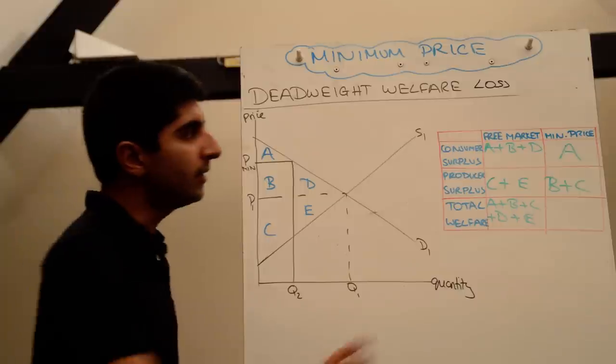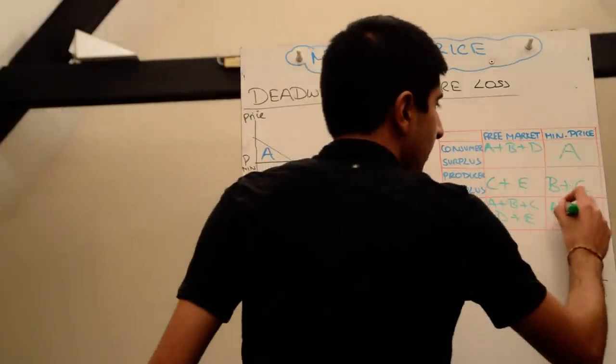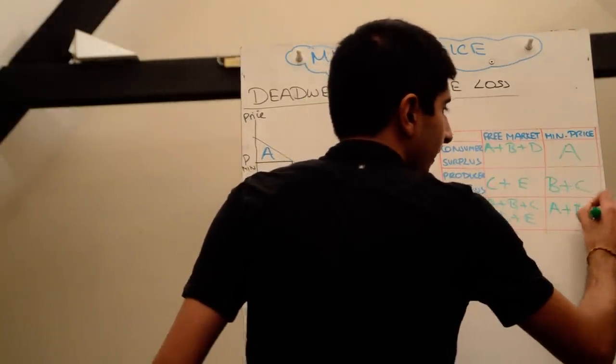That means add up our total welfare and we get A plus B plus C. Compare that to the welfare we had before and we'll realize straight away that areas D and E are both being lost.